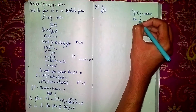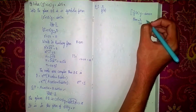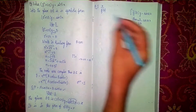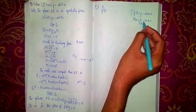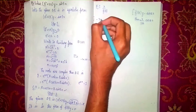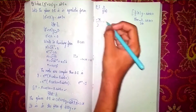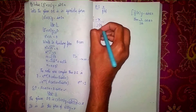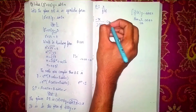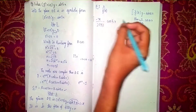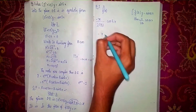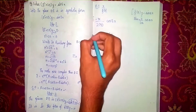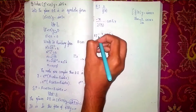Applying the formula for this case, the particular integral becomes minus x divided by 2 times a, times cos(ax), where a equals 5. So PI equals minus x divided by (2 times 5) times cos(5x), which gives PI equals minus x cos(5x) divided by 10. This completes Step 2.